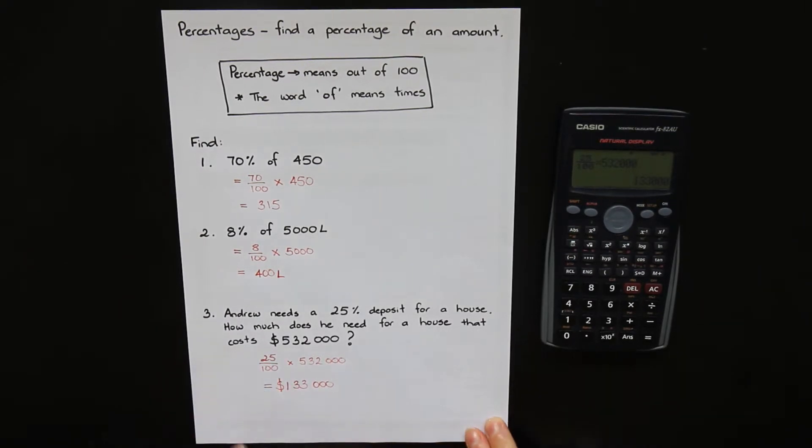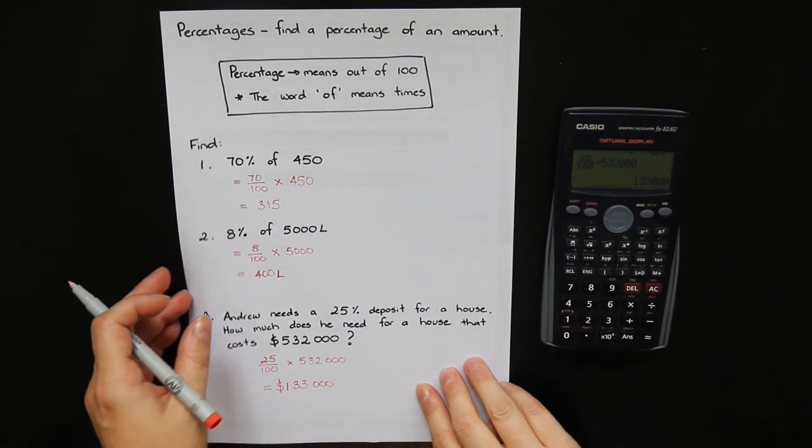25% of 532,000 equals 133,000. So that would be the deposit needed. Andrew needs $133,000 for the deposit for his house. Let's flip the page.